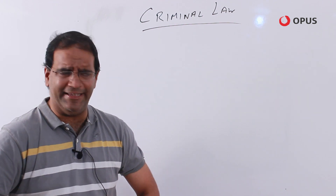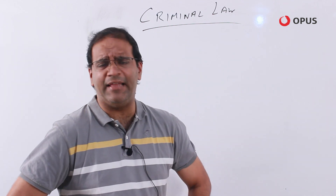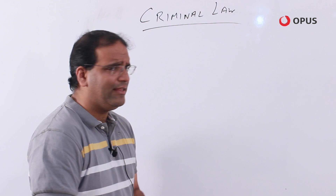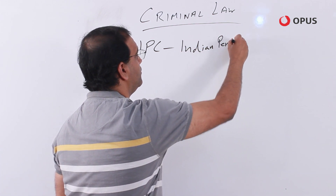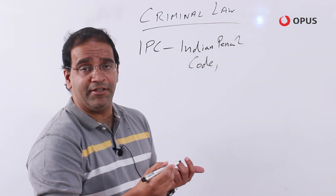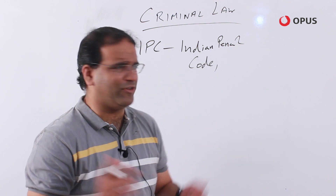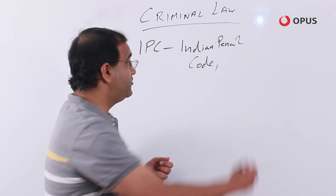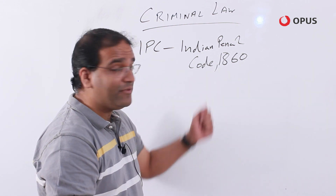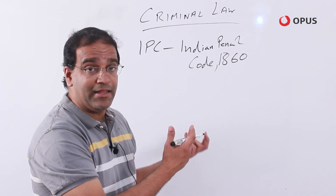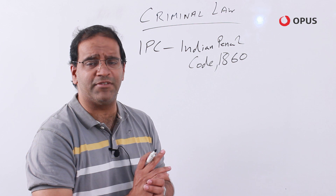Let's look at criminal law in more detail. In India, there are three laws which primarily deal with crimes. The three most important ones are the IPC, the CrPC, and the Indian Evidence Act. The IPC is the Indian Penal Code, framed way back in 1860 — almost 160 years ago — by the British, since we were under British rule at that time. But it is still very much in force and possibly the fulcrum of criminal law in India.